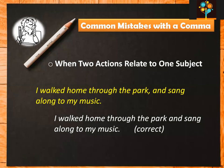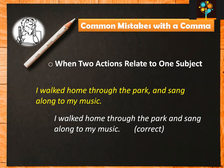The second situation where you must not use a comma is when two actions relate to one subject. For example: I walked home through the park and sang along to my music. The same subject 'I' is doing two different things. If two actions both relate to the same subject, then a comma is unnecessary. The correct sentence is: I walked home through the park and sang along to my music.